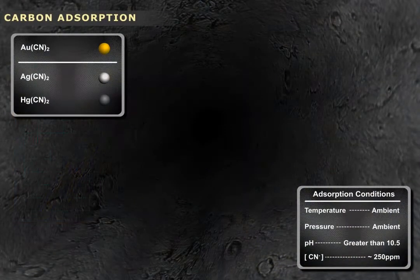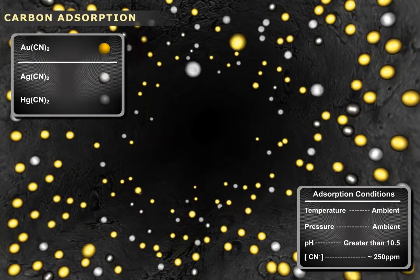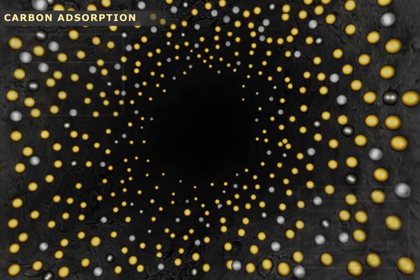The adsorption process is carried out at atmospheric temperature and pressure. During the process the metals migrate from a cyanide leach solution to the surfaces of carbon pores.